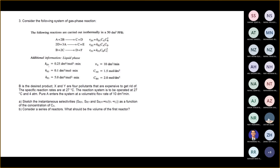The question also provides volumetric flow rate and initial concentrations of A and B. B is the desired product, while C, D, E, and F are the undesired ones. The rate reactions are at 27 degrees Celsius, and the system operates at 27°C and 4 ATM. Pure A enters at 10 dm³/min.